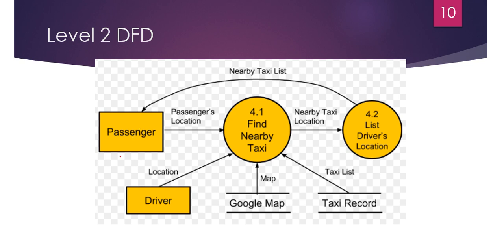In this Level 2 DFD example: passenger is an external entity, driver is an external entity. 'Finding nearby taxi' is a process, and 'listing driver's location' is also a process. Google Map contains some information and is a kind of database — a data store. 'Taxi record' is also a data store where some data is stored.